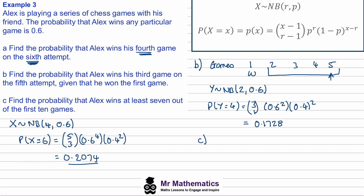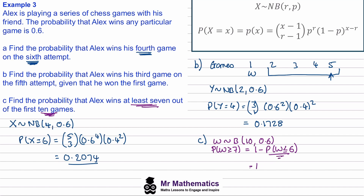For part c, we're not specifying when he wins his last game, so this is a standard binomial distribution. W ~ B(10, 0.6), and we want P(W ≥ 7) = 1 − P(W ≤ 6). Using the binomial CDF: 1 − 0.6177 = 0.3823.